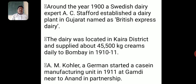Around the year 1900, a Swedish dairy expert A.C. Strafford established a dairy plant in Gujarat named the British Express Dairy. The dairy was located in Karya district and supplied about 45,500 kg of cream daily to Bombay in 1910–1911.